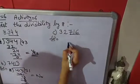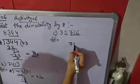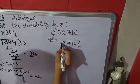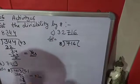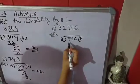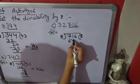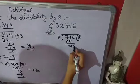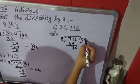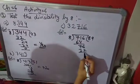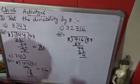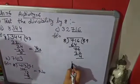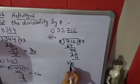In C part, we will take the last 3 digits and check if it is divisible by 8 or not. It is also not divisible by 8, so its answer is no.